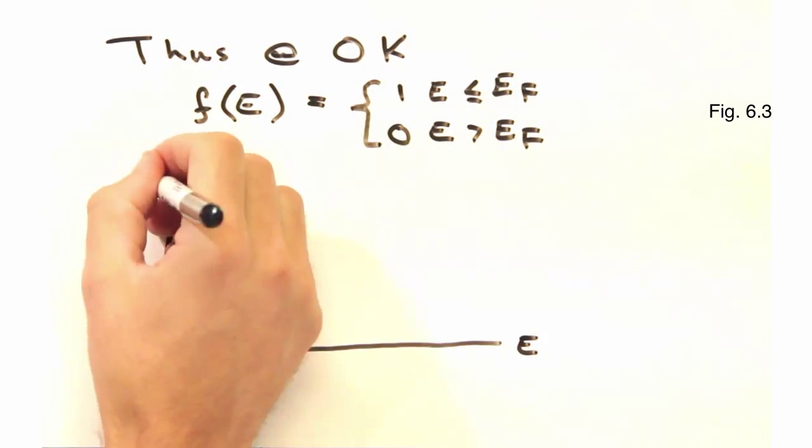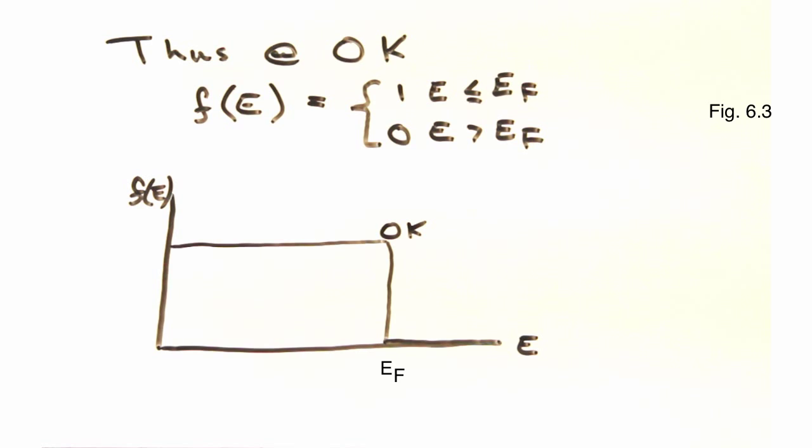At 0 kelvin, we have our nice step function, with unity up until the Fermi energy, and then 0.